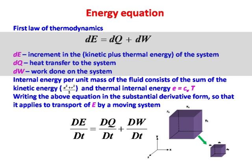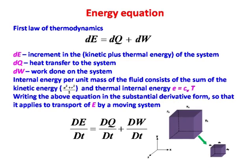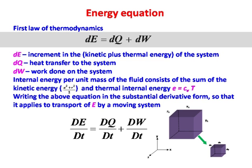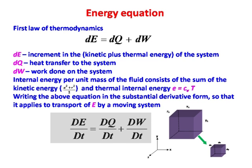If I take a total derivative, this internal energy per unit mass of the system consists of the kinetic component — u squared plus v squared by 2 (taking two-dimensional) — and thermal internal energy given by C_V times T. If I write this internal energy change, heat transfer, and work done on the system in terms of a moving system using the substantial derivative, I get de/dt = dq/dt + dw/dt. Note that this is the substantial (total) derivative.